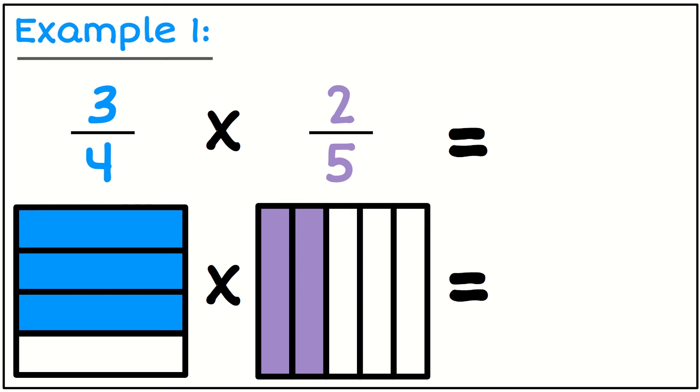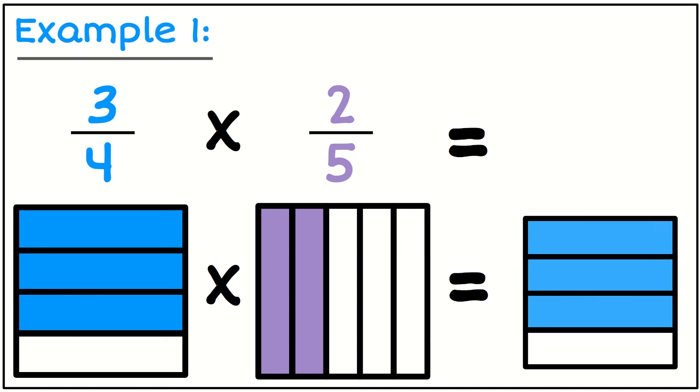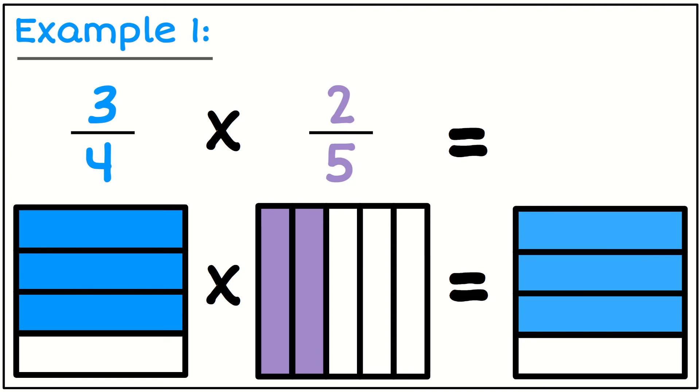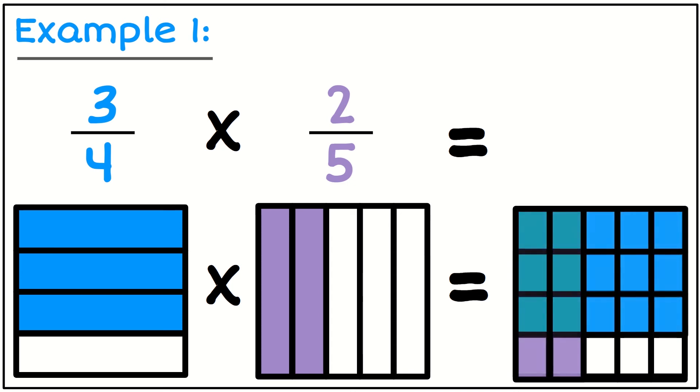Three quarters—I want to find some part of that. That's what the multiplication is doing: finding a smaller amount. So I take my three quarters and I'm going to overlay that with my two fifths.